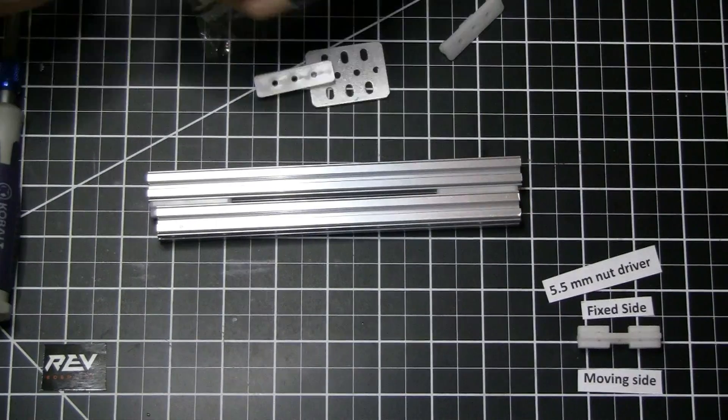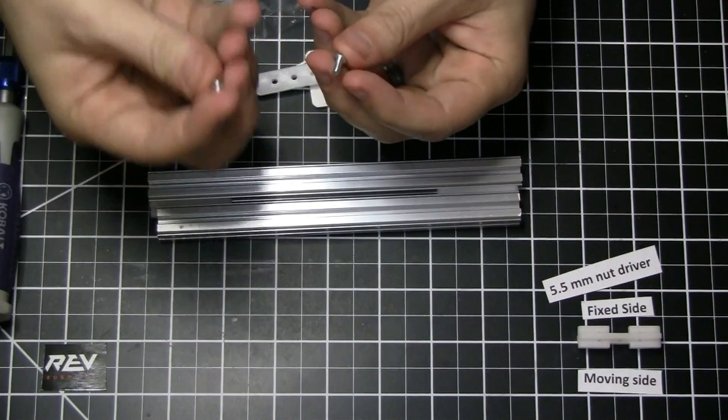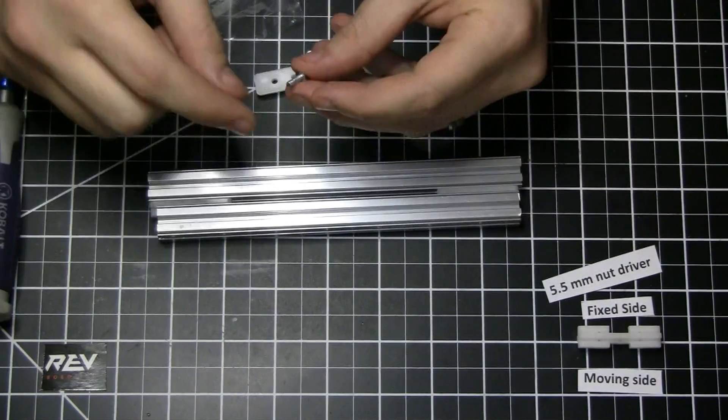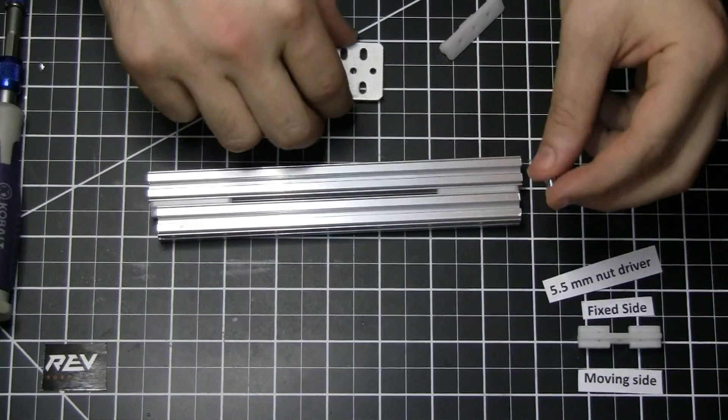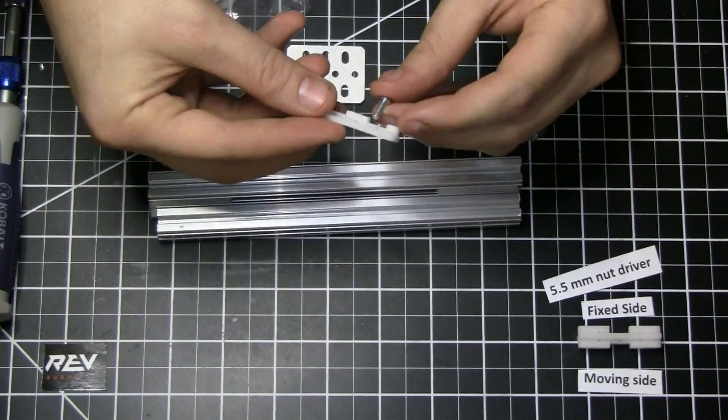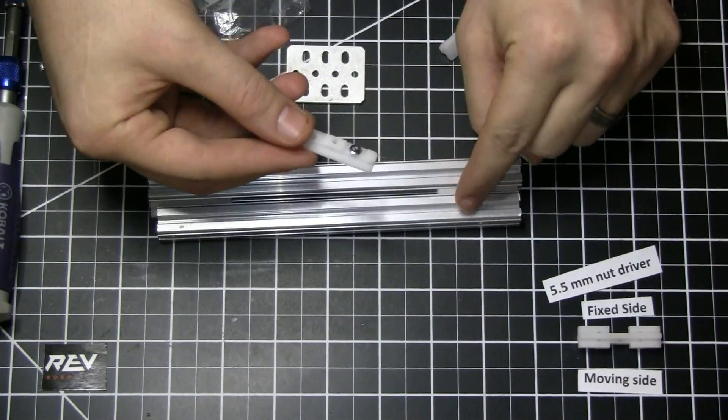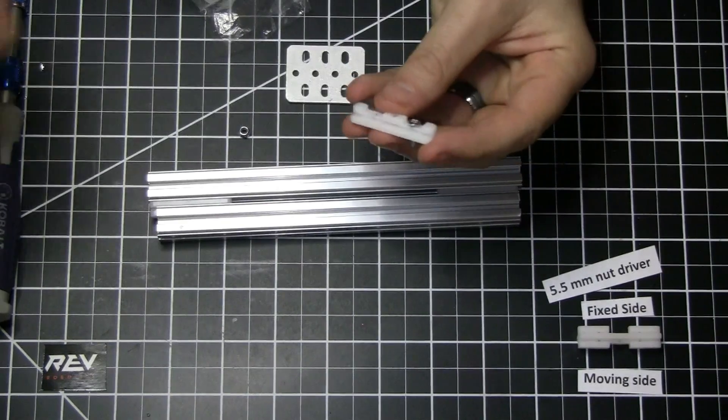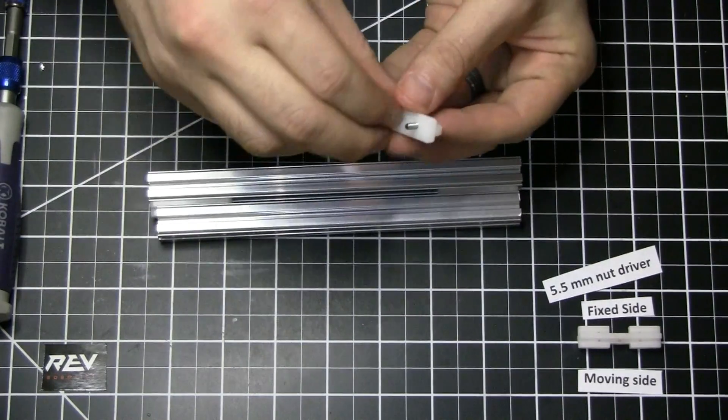In this case because we've got the nylock screws and the 10 millimeter length, it's a little bit longer. So that's why you need the longer screw. Same thing, this time the head of the screw is going to be in the slot. So you take two of your screws and put them on.